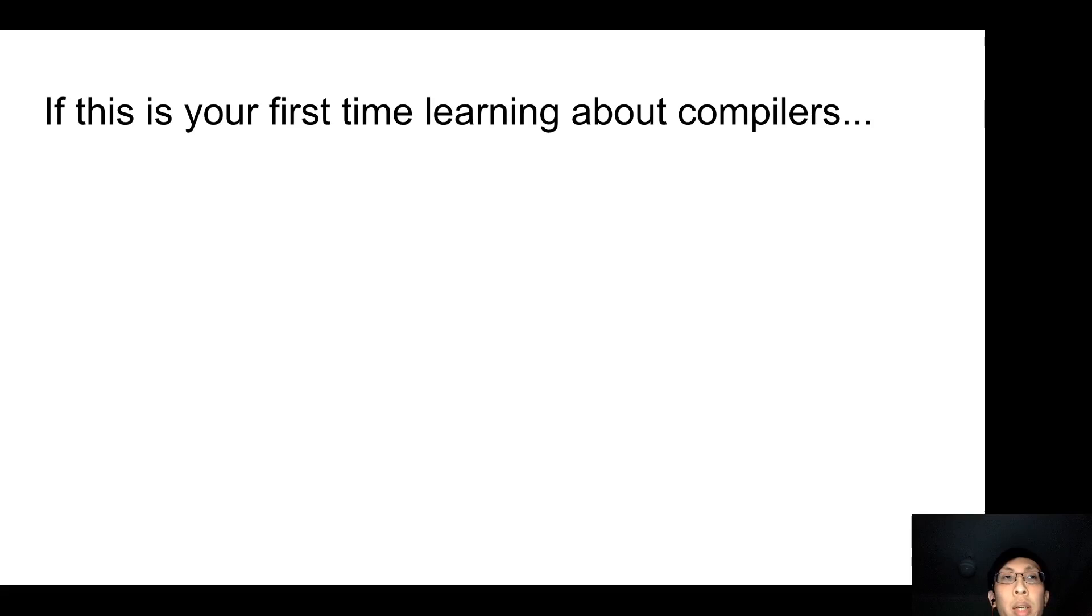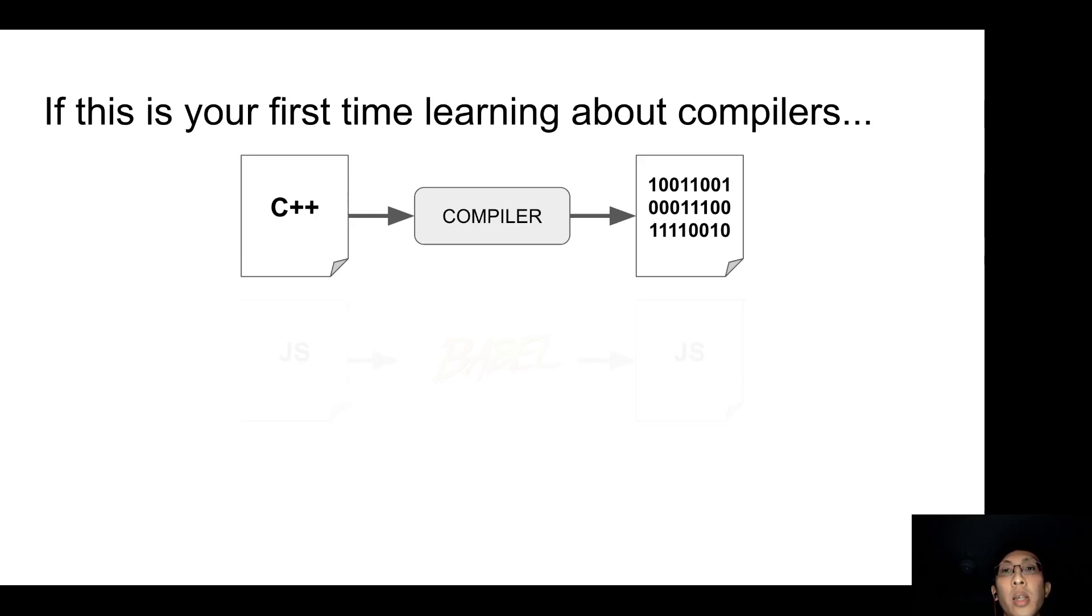A C++ compiler compiles C++, a programming language code, into binary code, another language code, which we humans don't write anymore. Another example that's closer to our heart is Babel. It compiles next-generation JavaScript code into browser-compatible JavaScript code.